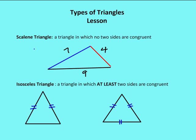An isosceles triangle is a triangle in which at least two sides are congruent. Some isosceles triangles are also going to be equilateral triangles. All equilateral triangles are going to be isosceles triangles. So an isosceles triangle is sometimes an equilateral triangle because we don't know what the third side is, but an equilateral triangle is always isosceles because it has at least two sides that are congruent.